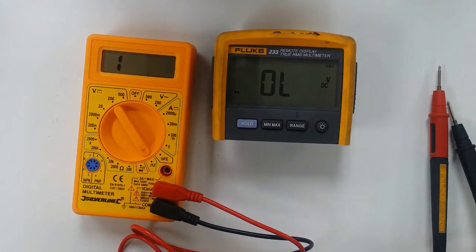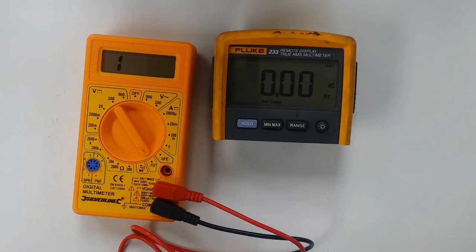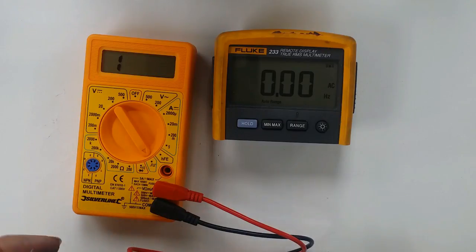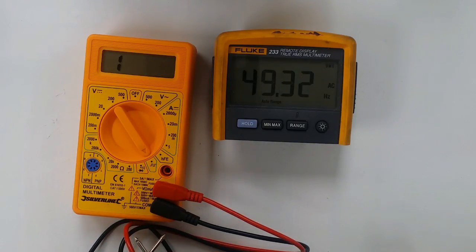Right, one I wanted to check. The instructions say this gives a 50 Hertz output. Right, let's see if we can measure this on the Fluke. Okay, it's giving 49.32 Hertz.